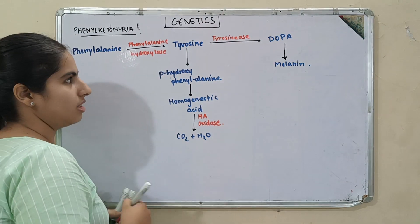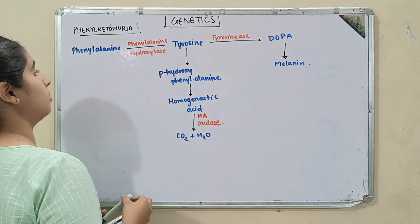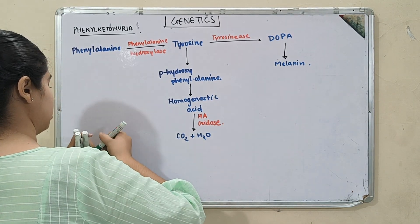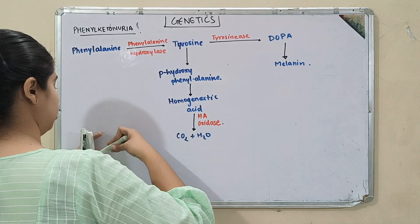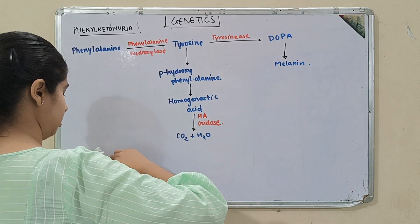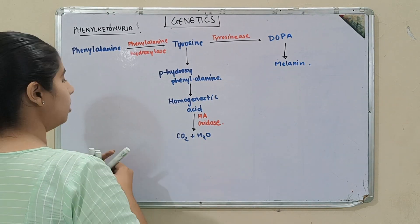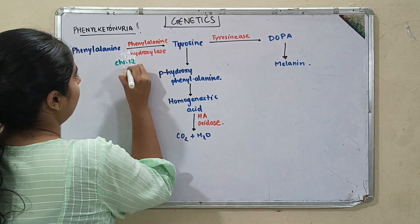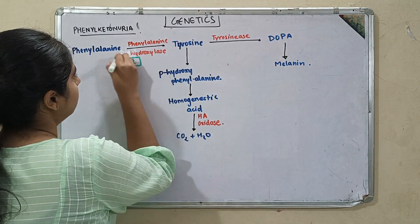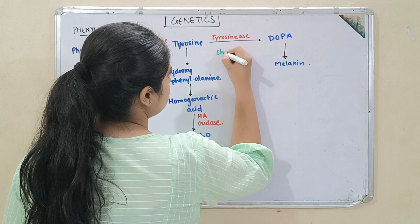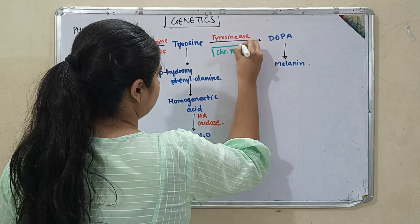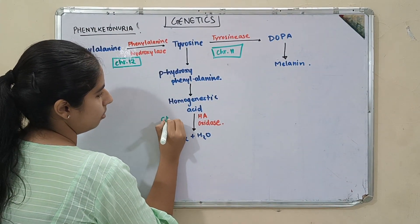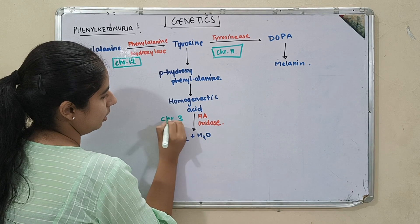Now, phenylalanine hydroxylase is an enzyme whose gene is present on chromosome number 12. Tyrosinase is present on chromosome number 11. Homogentisic acid oxidase is present on chromosome number 3.